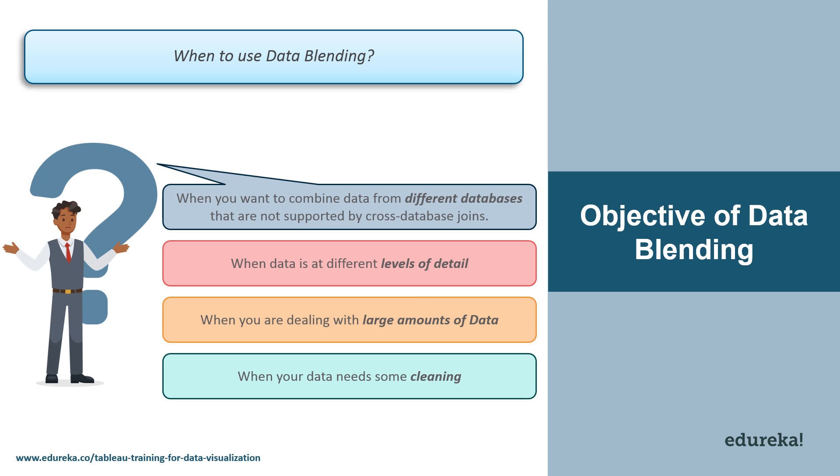Next is when you have data at different levels of detail. Now sometimes one data set captures data using greater or lesser granularity than the other data set. For example, suppose you are analyzing transactional data and quota data. Now your transactional data might capture all transactions. However, quota data might aggregate transactions at a quarter level. Because the transactional values are captured at a different level of detail in each data set, you should use data blending to combine data.